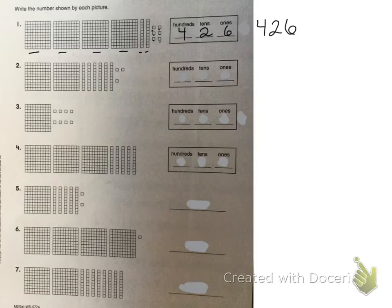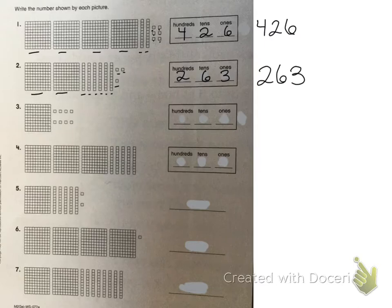Let's do the other one. Here I've got two hundreds. Then one, two, three, four, five, six tens, and three ones. So my end number is two hundred sixty-three.